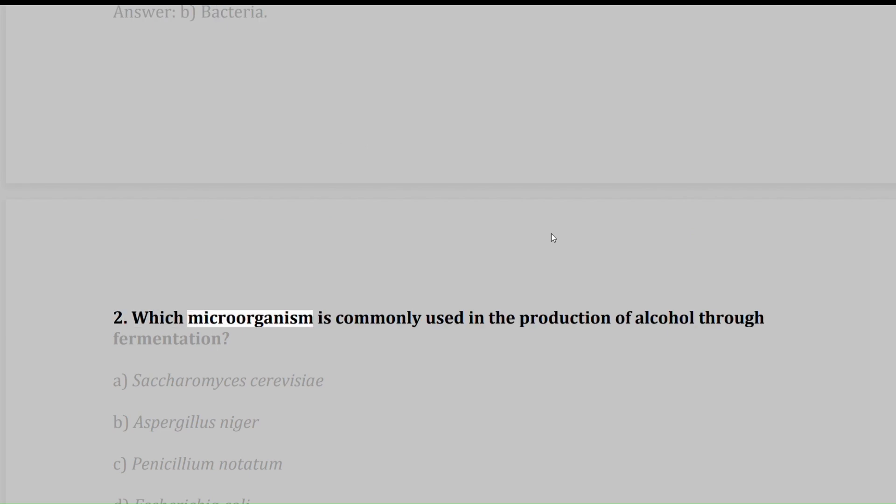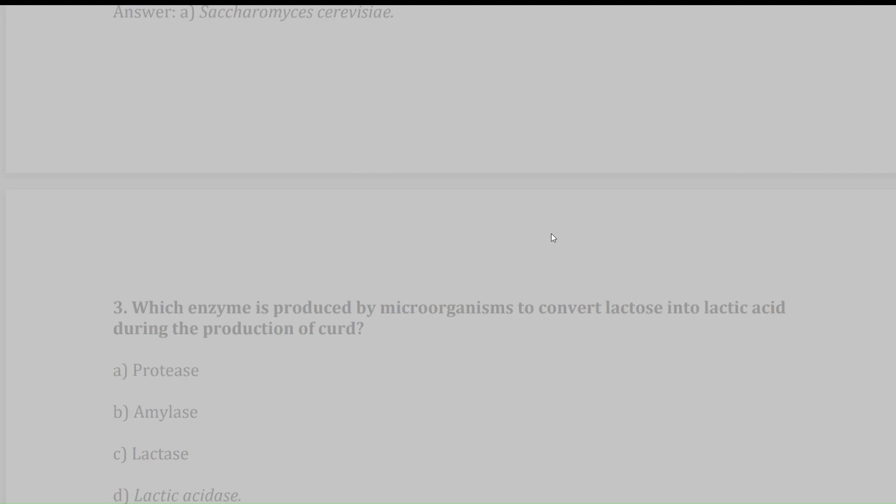2. Which microorganism is commonly used in the production of alcohol through fermentation? A. Saccharomyces cerevisiae, B. Aspergillus niger, C. Penicillium notatum, D. Escherichia coli. Answer: A. Saccharomyces cerevisiae.